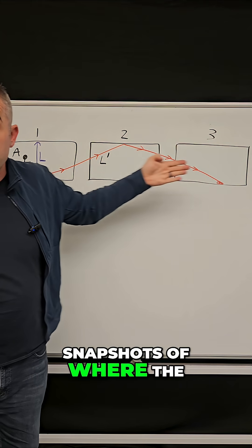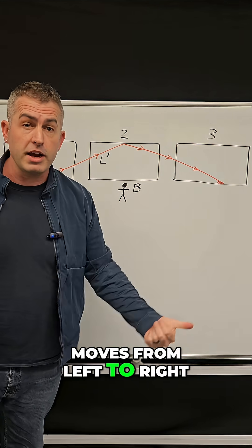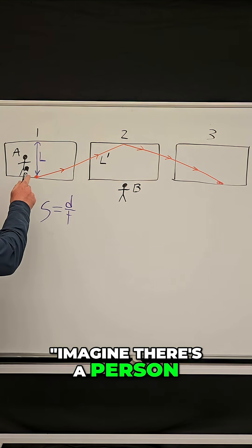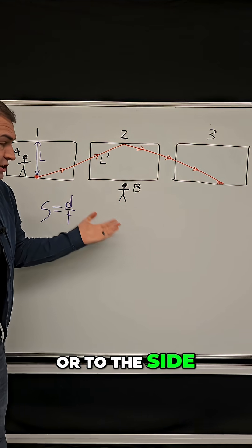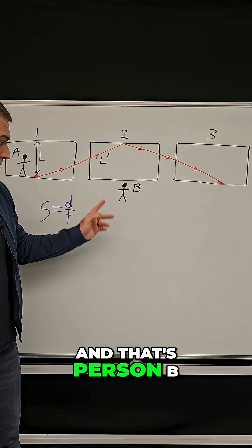These are just three snapshots of where the train is as it moves from left to right. And then he said, imagine there's a person on this train, that's person A, and there's another person on the train tracks or to the side just watching this train go by, and that's person B.